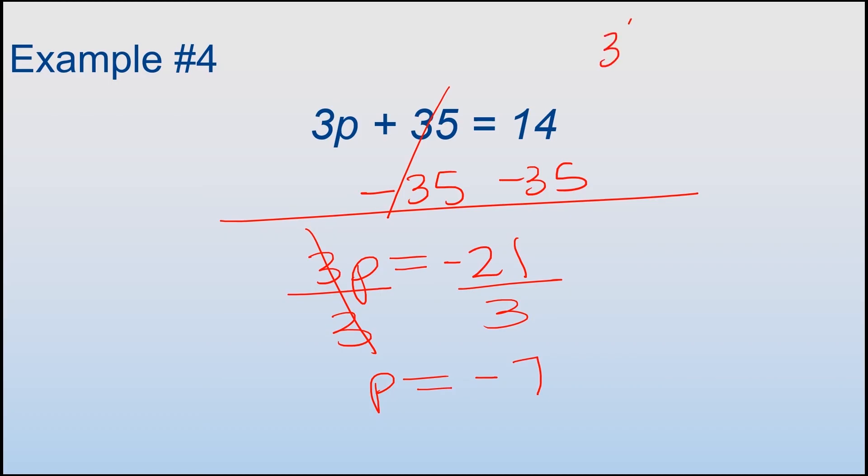Now I'm going to rewrite the original problem, but instead of P, I'm gonna write -7. 3 times -7 + 35 = 14. So 3 times -7 is -21 plus 35 equals 14. So -21 plus 35 is 14. So that does equal 14. That means I've solved number four correctly.